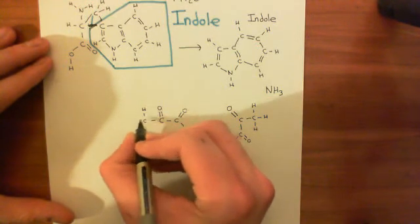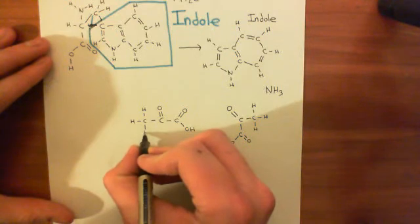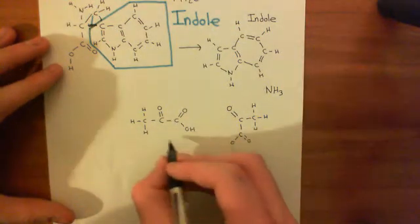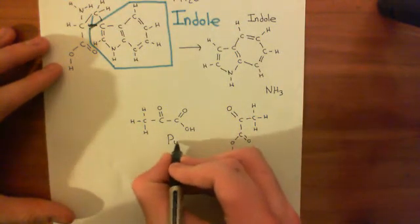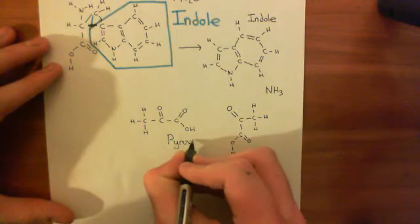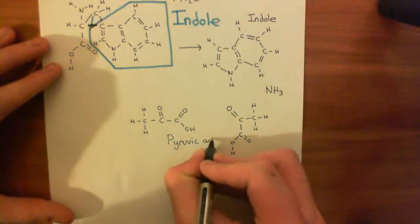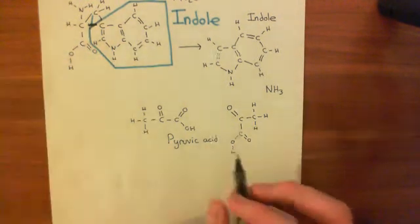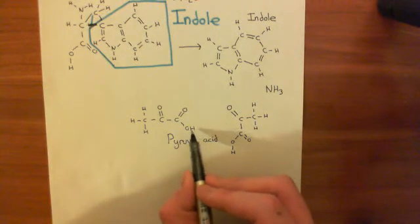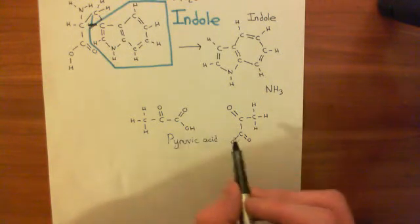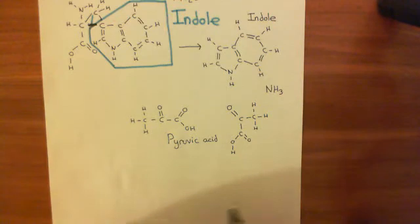I'll give you a clue. Glycolysis. This here is the structure of pyruvic acid. Pyruvate, or pyruvate. This specifically, what I've drawn is pyruvic acid. Pyruvate is the molecule with this proton removed, the conjugate base of pyruvic acid.